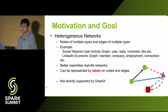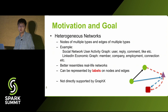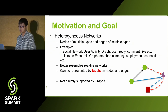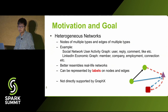The other type is what we call a heterogeneous network, which basically contains nodes of multiple types as well as edges of multiple types. One example is a social network user activity graph, where for nodes you only have users, but for edges you can have multiple types — like the reply action or comment action between them. A more complicated scenario is LinkedIn's economic graph, which tries to map different entities in the economy in one single graph — with nodes like members, companies, and jobs, as well as different types of edges like employment and friendship connections.